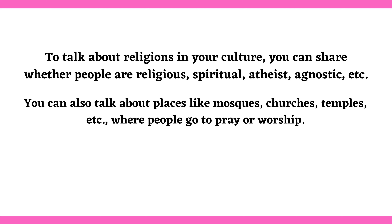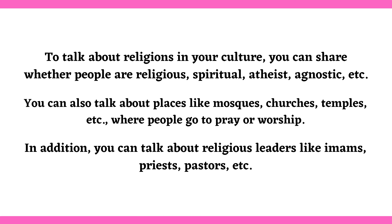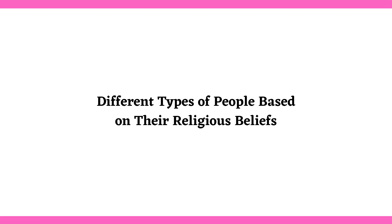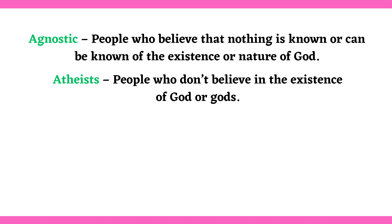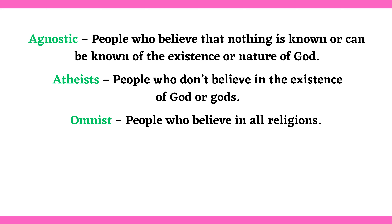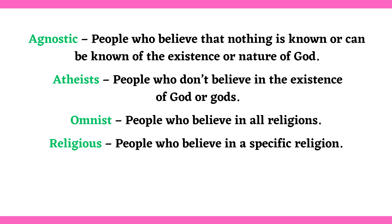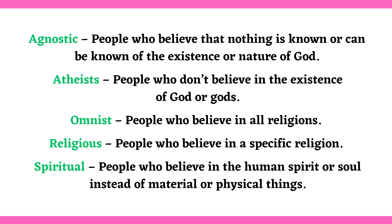You can also talk about places like mosques, churches, temples, etc., where people go to pray or worship. In addition, you can talk about religious leaders like imams, priests, pastors, etc. Different types of people based on their religious beliefs: Agnostic — people who believe that nothing is known or can be known of the existence or nature of God. Atheist — people who don't believe in the existence of God or gods. Omnist — people who believe in all religions. Religious — people who believe in a specific religion. Spiritual — people who believe in the human spirit or soul instead of material or physical things.